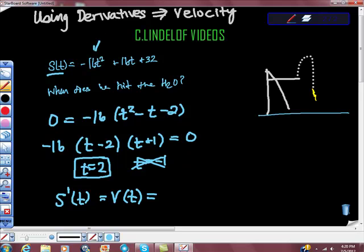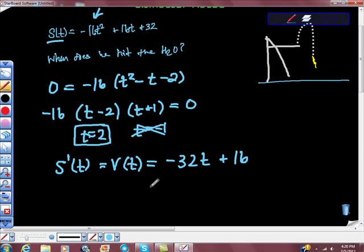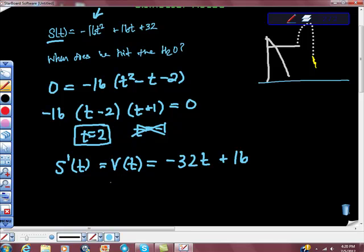And the first derivative, I'm going to take the derivative of this function up here, would give us negative 32t plus 16. And we know that he hits the water after 2 seconds. So we want v of 2.